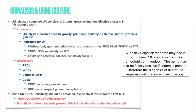First, let's discuss the urinalysis and urine culture. You'll definitely be ordering this a lot in practice and will see a question on your boards exam. A complete UA consists of three components: a gross evaluation of the urine, a dipstick analysis, and a microscopic exam. The dipstick analysis measures specific gravity, pH, heme, leukocyte esterase, nitrite, protein, and glucose.